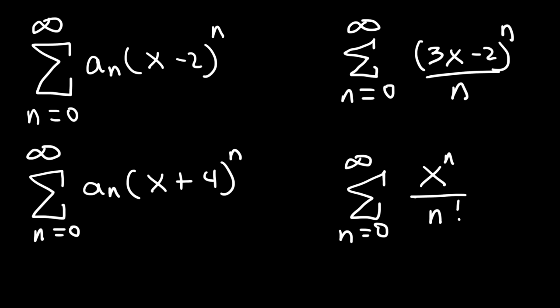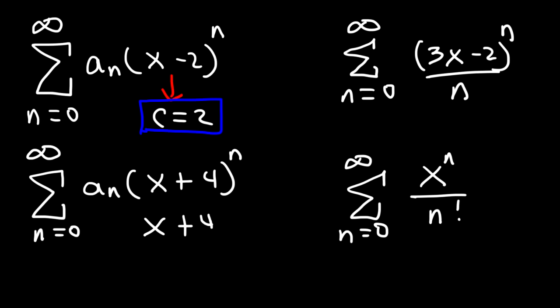Let's consider the first one on the upper left. Where is the power series centered at? Just by looking at it, you can see that it's centered at c equals 2. For the second one on the bottom left, another way to find the answer is by setting the inside — in this case x plus 4 — equal to 0 and solving for x. So at negative 4, this whole thing becomes 0, so it's centered at c equals negative 4.